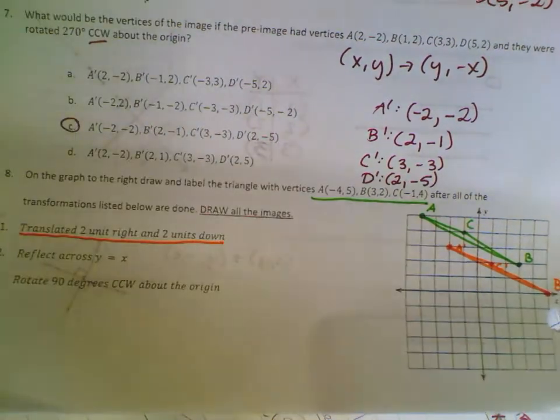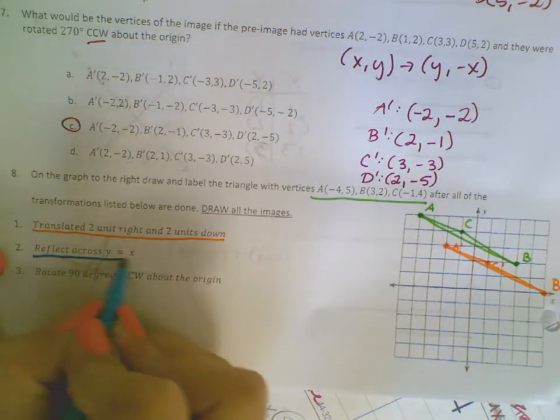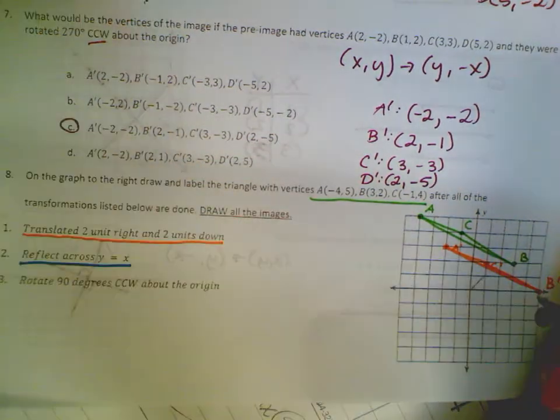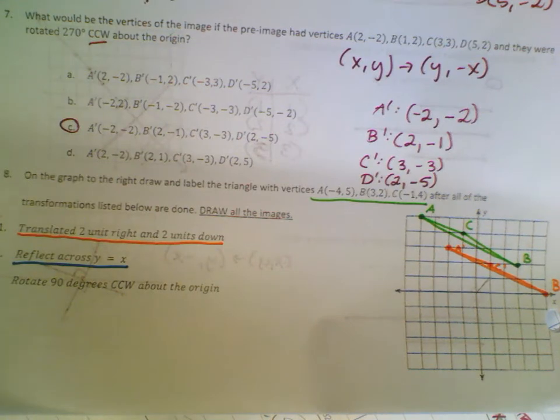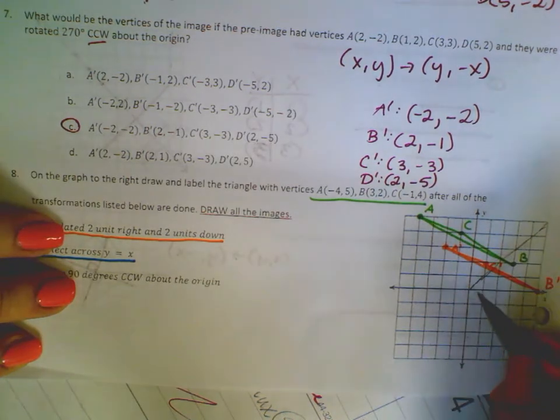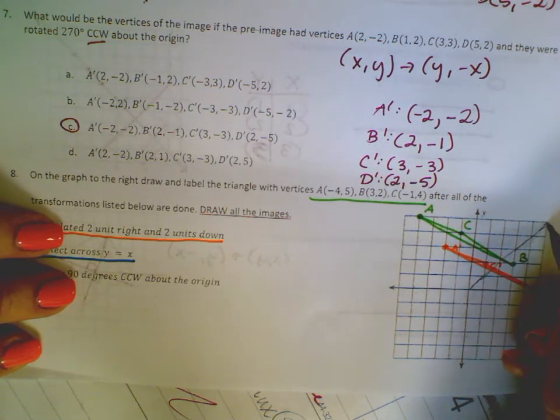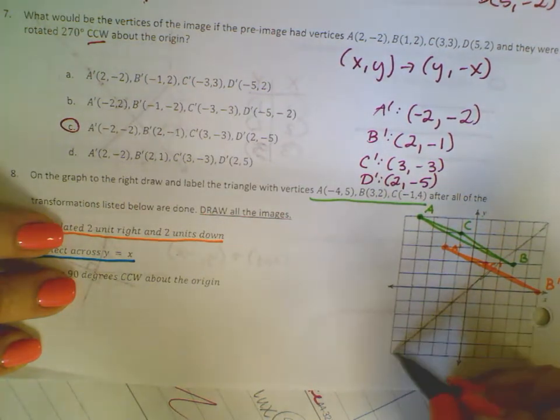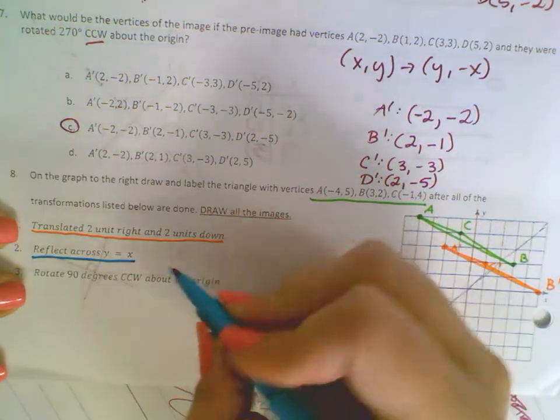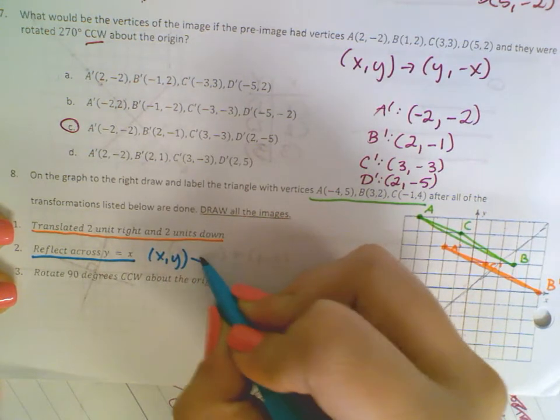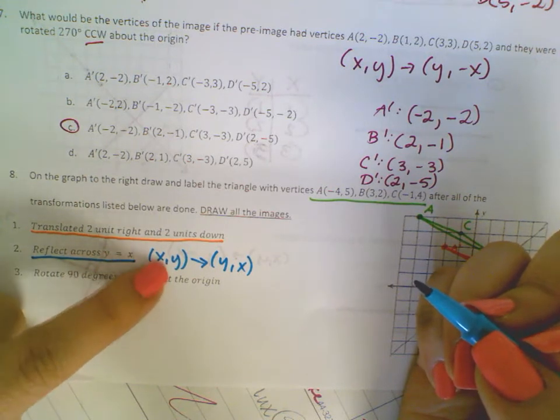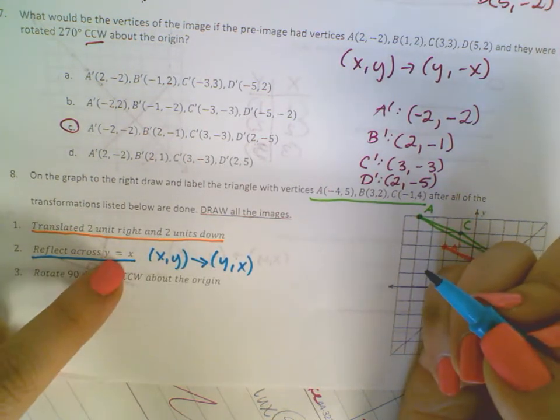Now it says to reflect across the line Y equals X. So if I draw that line, we're going to reflect across the line Y equals X, which is this line right here. That just goes 1, 1, 2, 2, 3, 3, 4, 4, 5, 5, and the other way as well. So in order to reflect across the line Y equals X, you need to know that XY becomes YX. Because if Y equals X, then X is Y and Y is X.